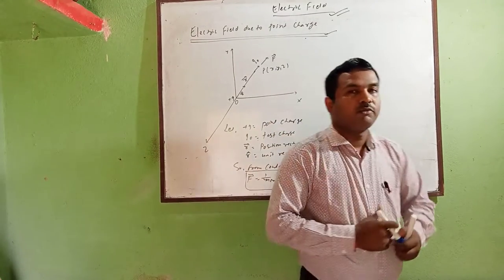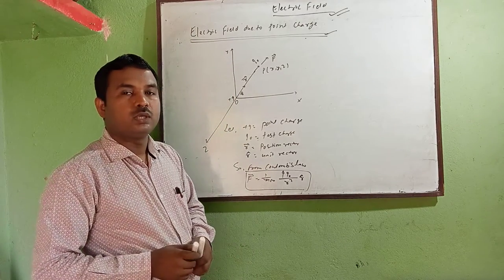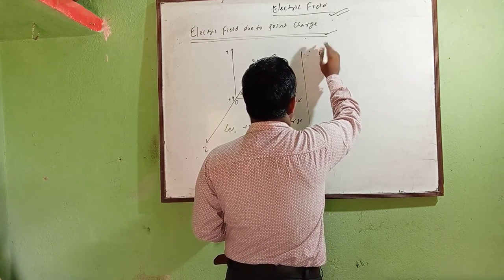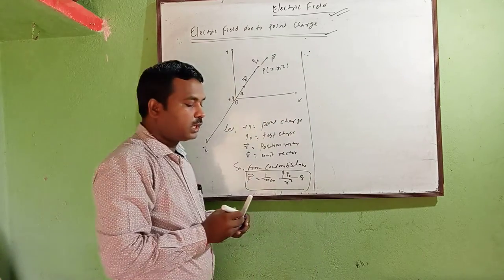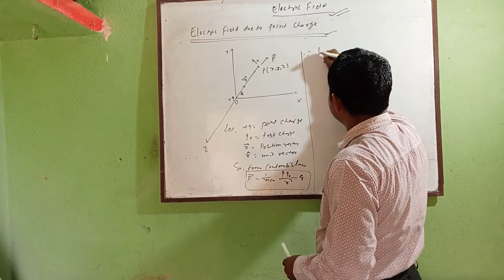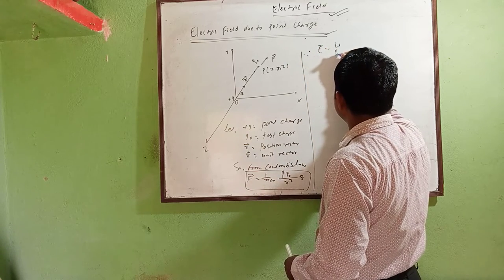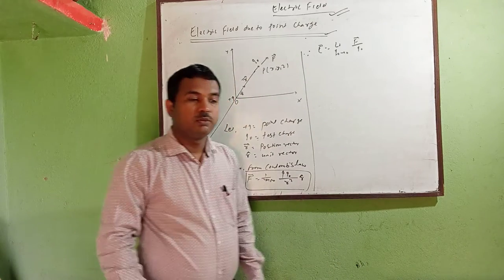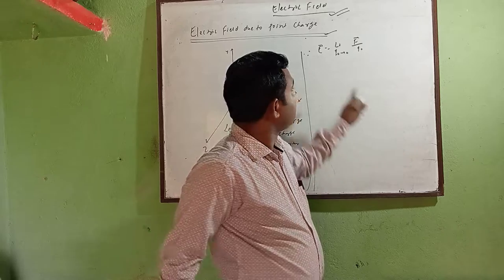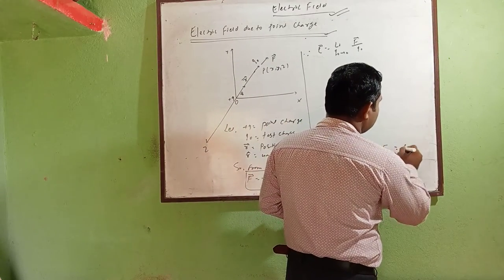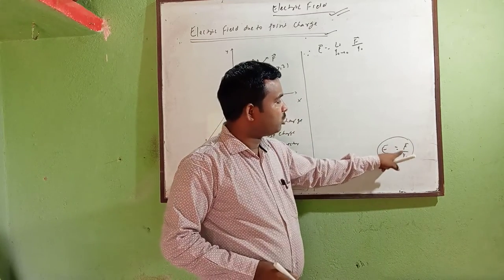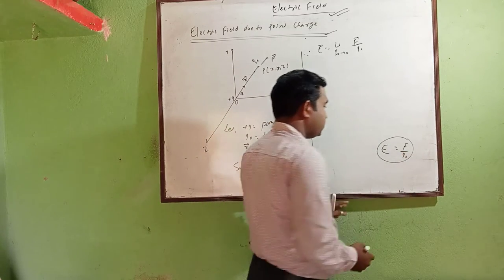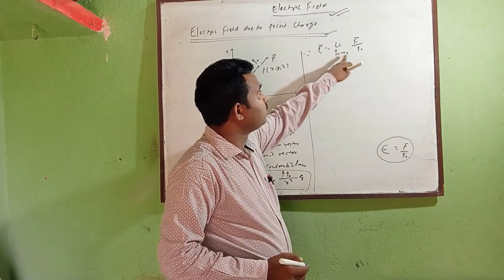We also have the formula for electric field due to a point charge. Since E equals the limit as q₀ tends to zero of F divided by q₀ — this is the formula. The electric field means force per unit test charge is called the electric field.